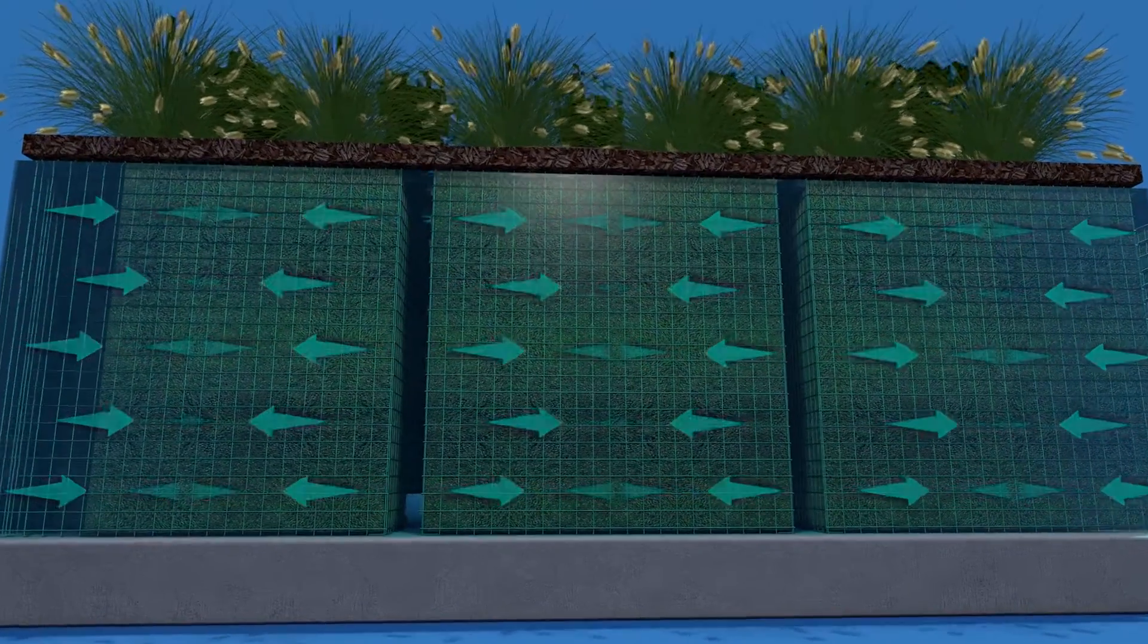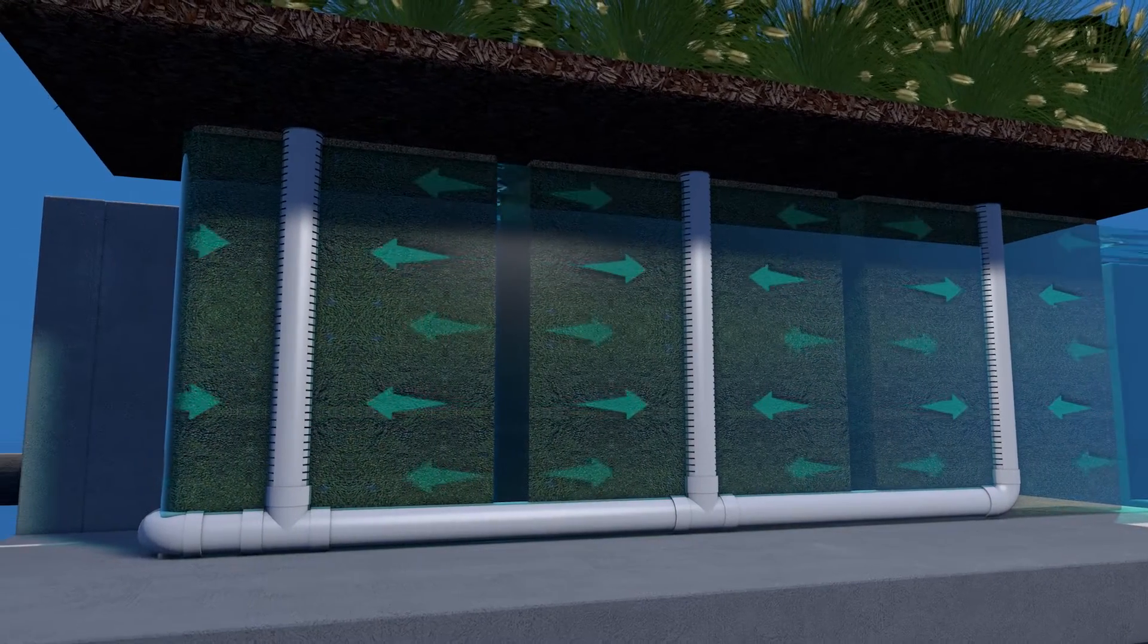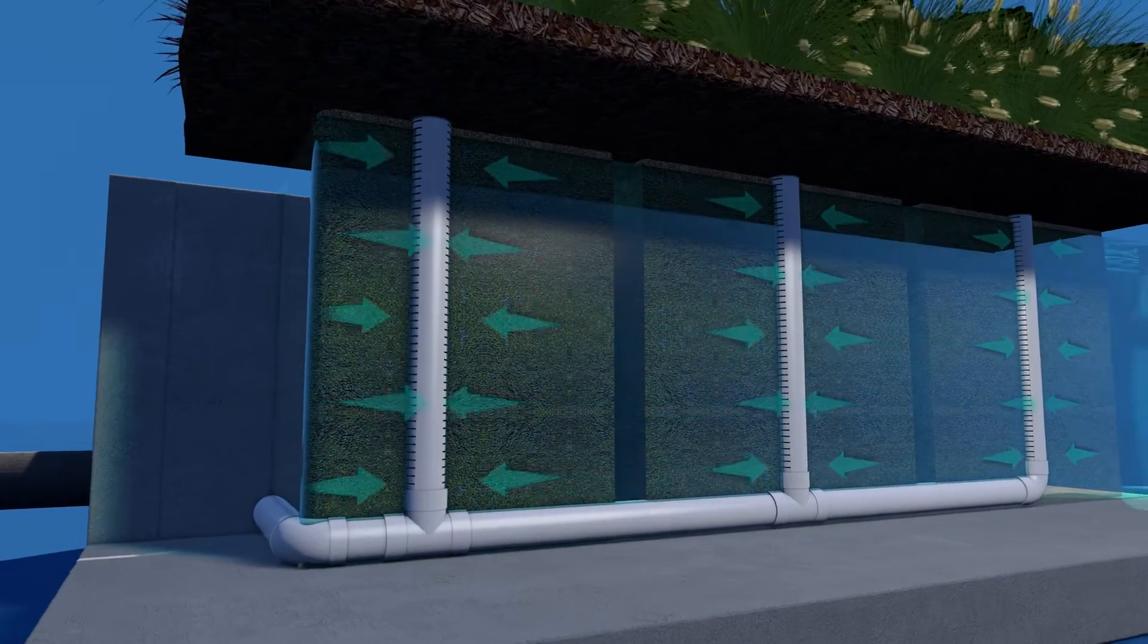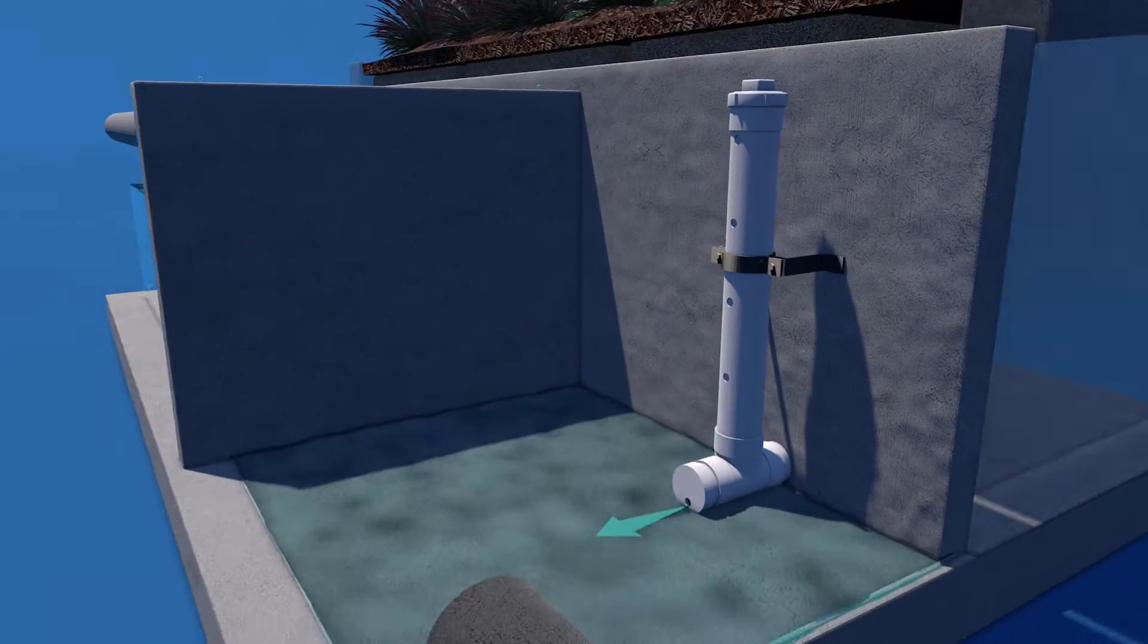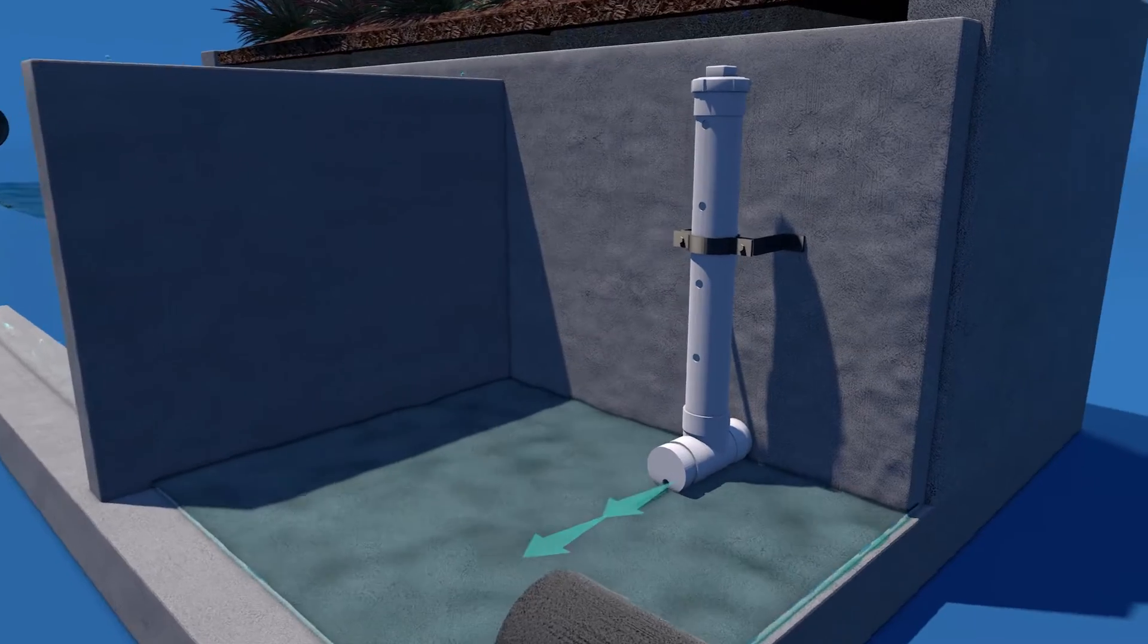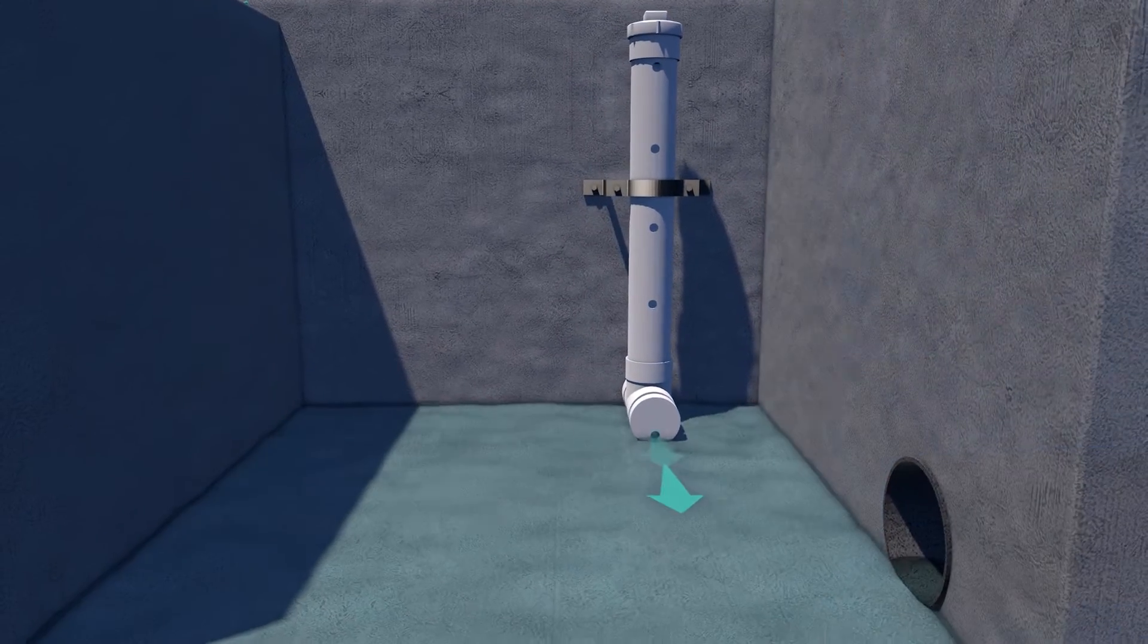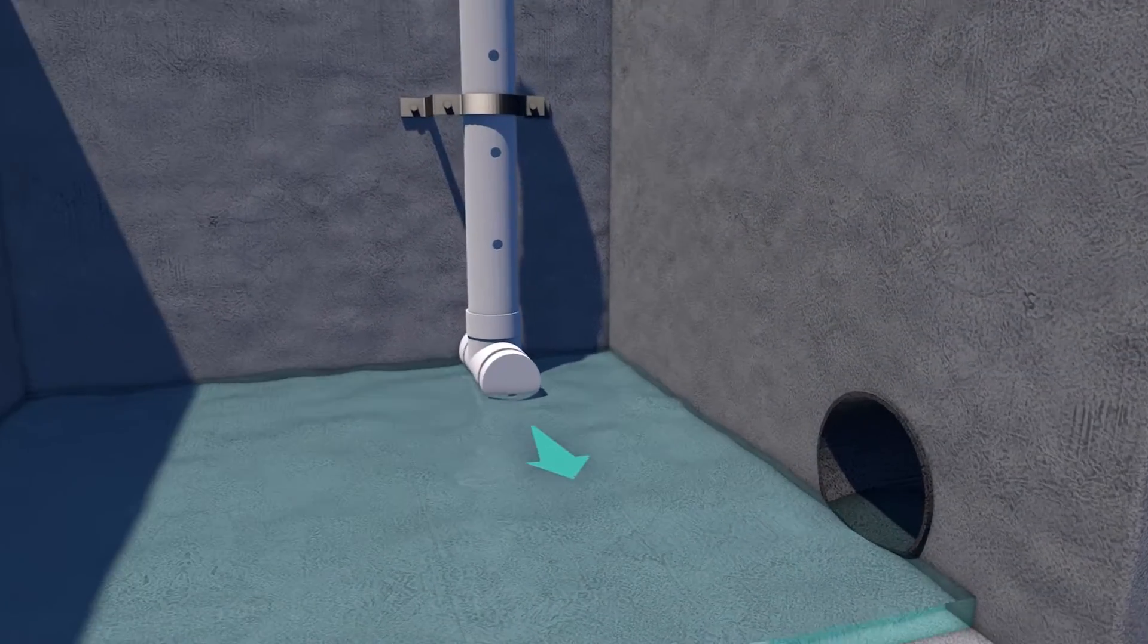Treated water then enters the specially designed vertical drain pipes to be discharged. An orifice control plate controls the flow of water through the media to a level lower than the media's capacity, ensuring media effectiveness.